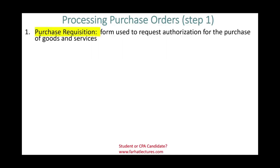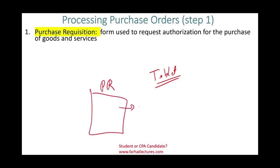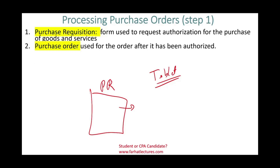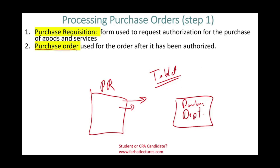When we want to buy something, we start with a form called a purchase requisition. Let's assume you want to buy a tablet for one of your employees — you work in a restaurant and you want them to take orders on a tablet. You fill out this purchase requisition form (PR), asking to buy a tablet. It is a form used to request authorization to purchase — you're asking: do you give me permission to buy it? Assuming the purchase requisition is approved by your supervisor, the purchasing department will issue a purchase order, meaning the tablet is approved by someone with the authority to approve it.